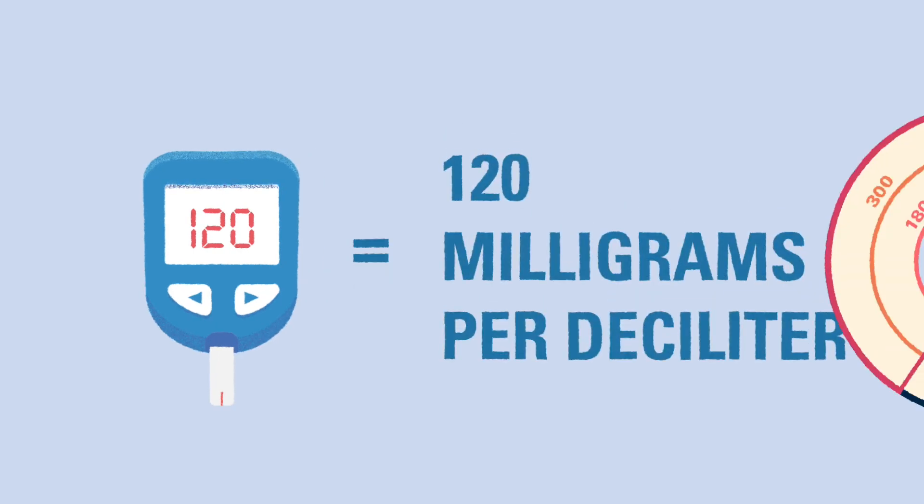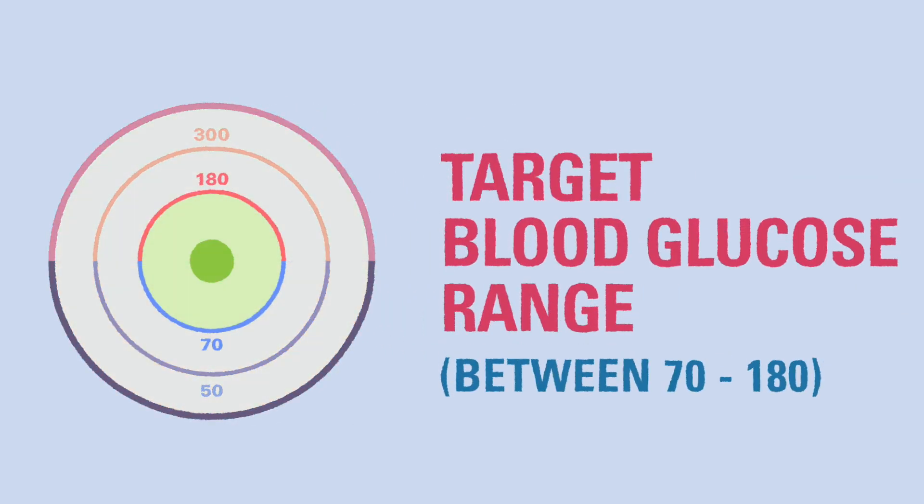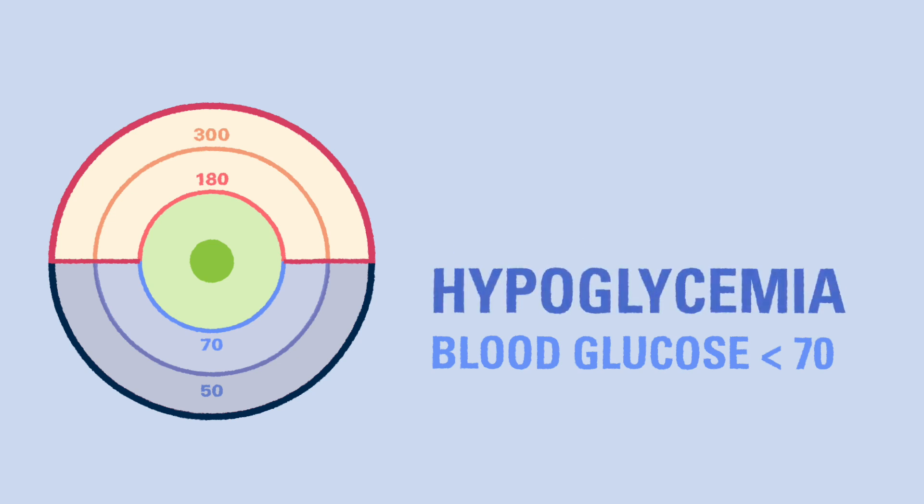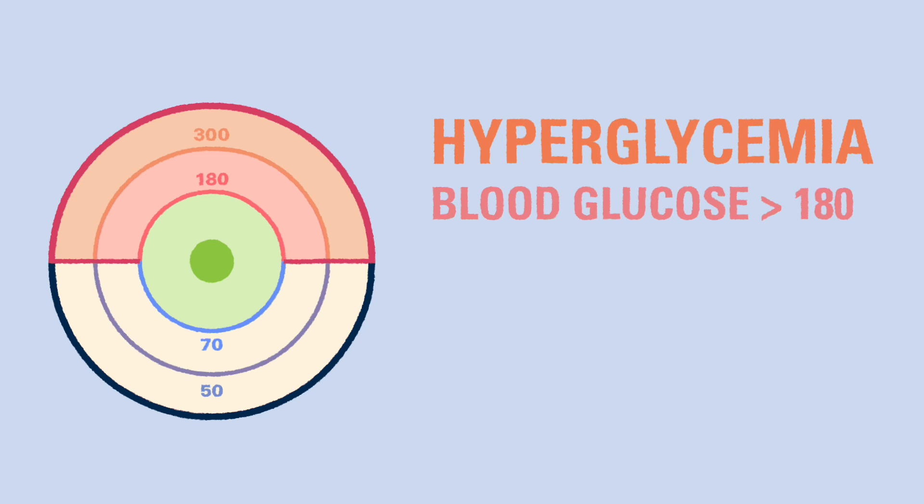When we talk about the target blood glucose range, we're aiming for the space between 70 and 180. Results less than 70 are considered low. We'll talk more about low blood glucose, known as hypoglycemia, in the next video. Likewise, results above 180 are considered high. High blood glucose is referred to as hyperglycemia. We'll also talk about hyperglycemia more in a future video.